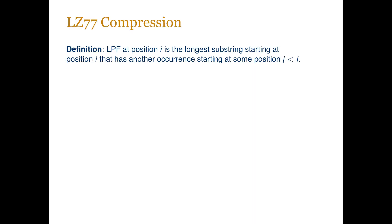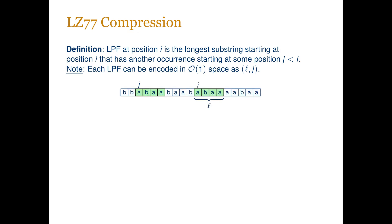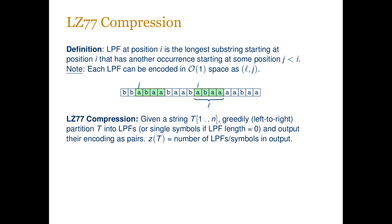Let us formally define LZ77 compression. The key concept in LZ77 is the longest previous factor, or LPF. The LPF of position i is the longest substring starting at position i that has another occurrence starting at some position j smaller than i. Note that LPF can be encoded in constant space as a pair containing its length and the position of the previous occurrence. The LZ77 compression is defined as follows: given a string T of length n, we greedily — left to right — partition it into LPFs or single symbols (if the LPF has length zero), and output the encoding of each as a pair. By z(T) we denote the number of pairs in the output.